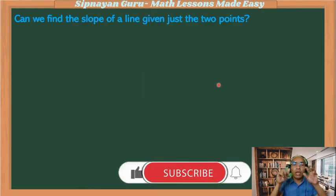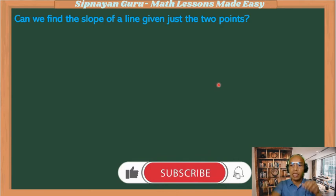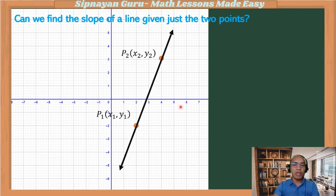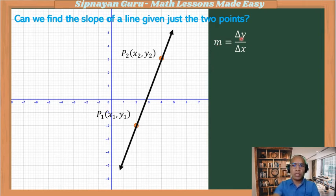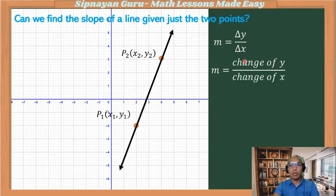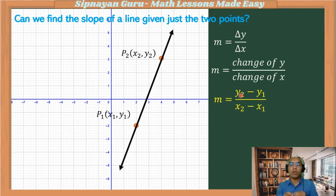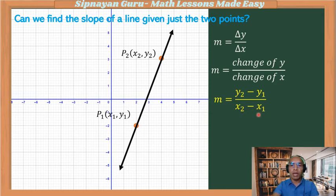Suppose we only have two given points — can we find the slope of a line? Mathematically, slope is Δy over Δx, which means the change in y-coordinates over the change in x-coordinates — the vertical change over the horizontal change. When we get the vertical or horizontal change, we simply subtract the y and x coordinates of the two given points respectively. Therefore, slope m equals (y₂ − y₁) over (x₂ − x₁).